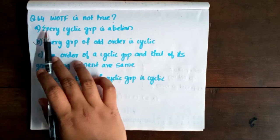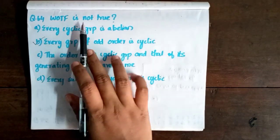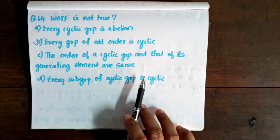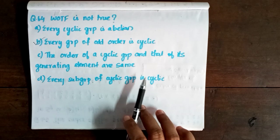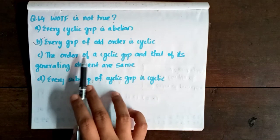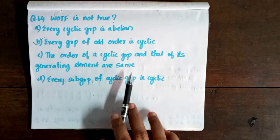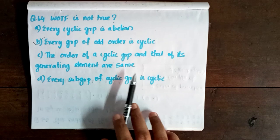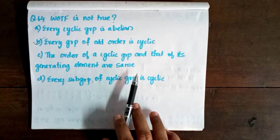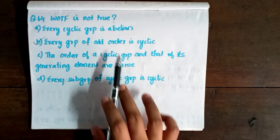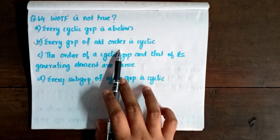Next, question 64: Which of the following is not true? Checking the options — every group of prime order is cyclic is a true statement. Option B states something incorrect about group order. After checking, option B is incorrect. So option B is the answer to 'which is not true.'